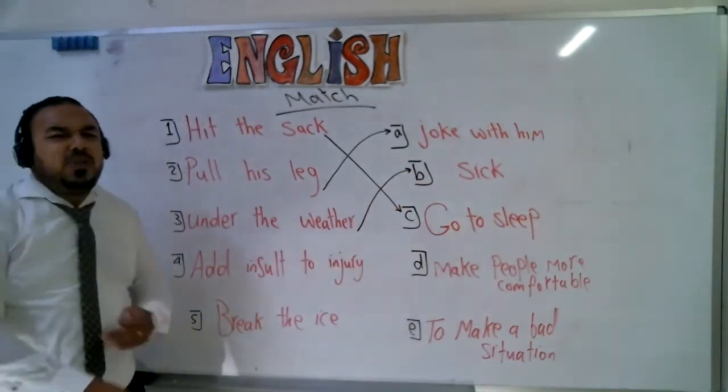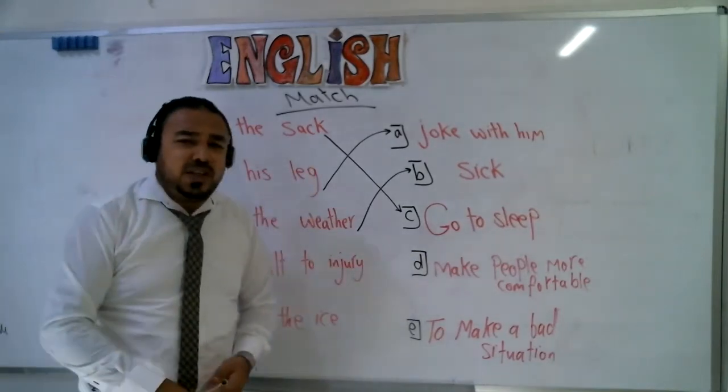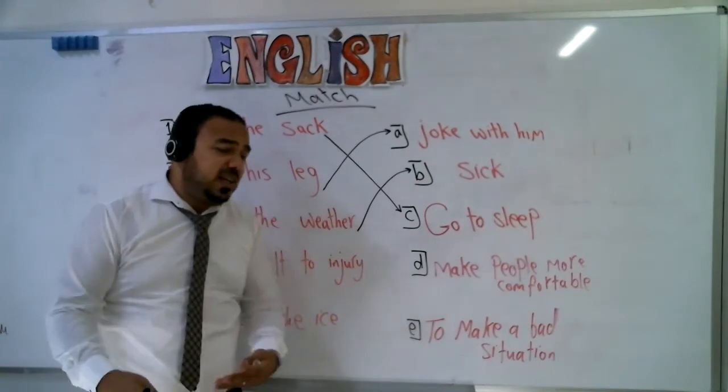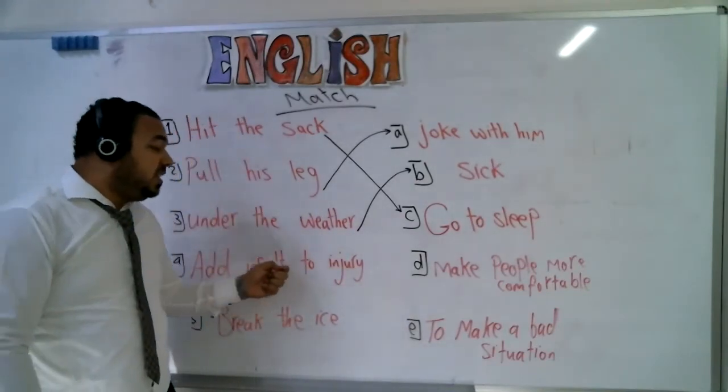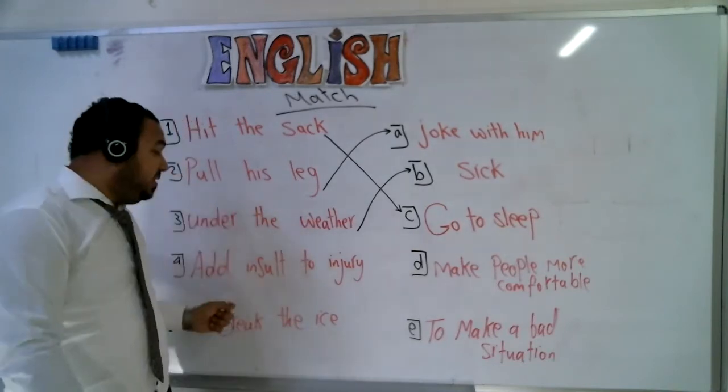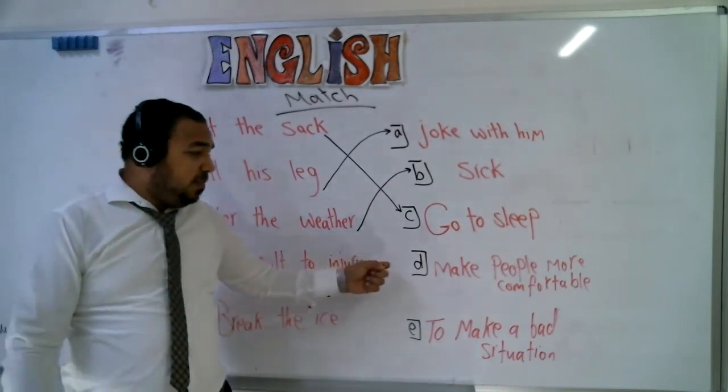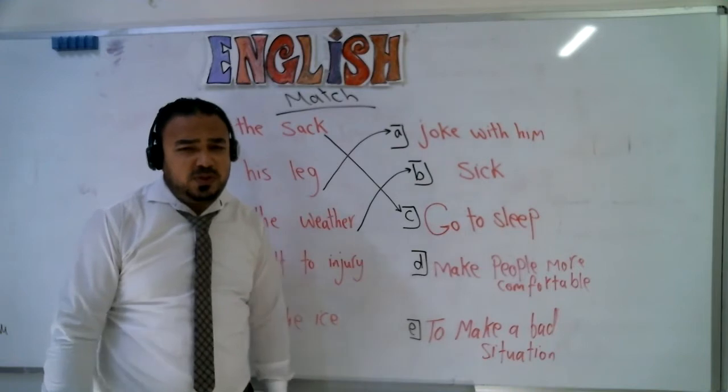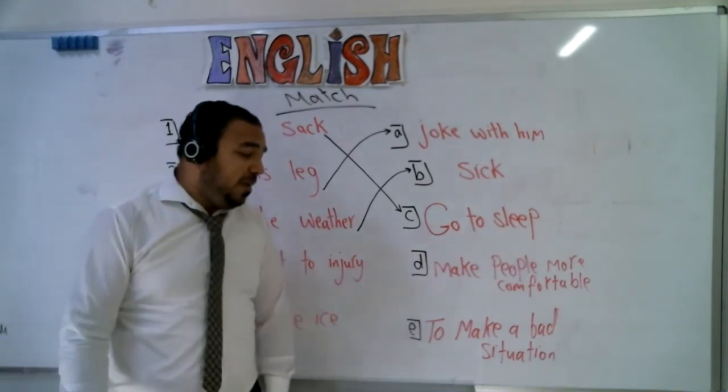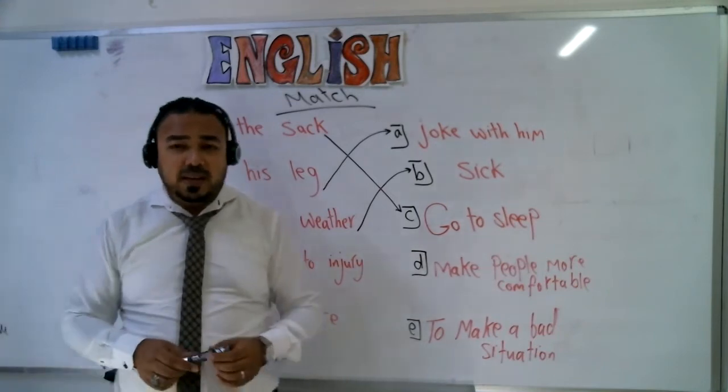Number four. I think it's common. It's in Arabic. It's a proverb in Chinese and a proverb in Japanese language. I think it's so common. Add insult to injury. Means what? Make people more comfortable to make a bad situation. Of course, to make a bad situation.